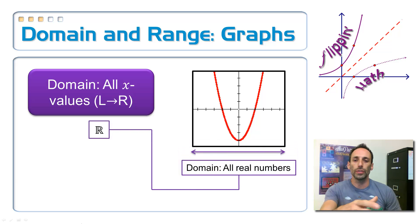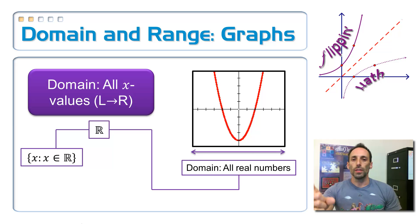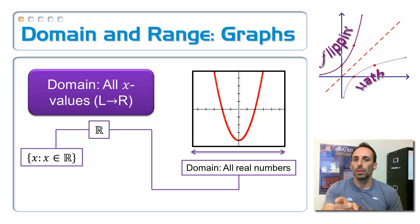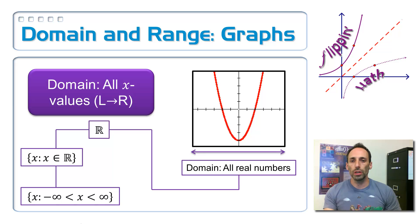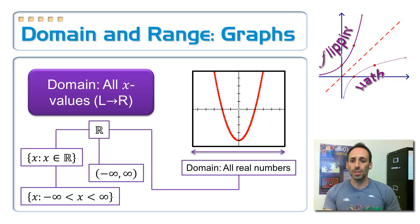Here are a whole bunch of ways that I could write that. I could use that double stroke or blackboard R for all real numbers. Or I could write it in set builder notation: the set of all x such that x is an element of the real numbers. Or I could write it as an inequality in set builder notation from negative infinity to infinity. Maybe I want to write it in interval notation — in interval notation, it looks like an ordered pair in parentheses, from negative infinity to infinity. Any of those things means all real numbers.